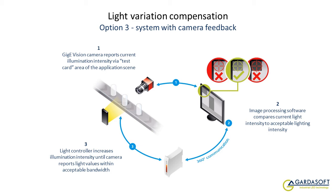The closed-loop system is structured as follows. Firstly, the camera identifies the optimum illumination intensity for the application. The image processing software then monitors acceptable operating illumination bandwidths, and the lighting controller automatically adjusts lighting intensity if necessary.